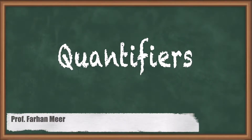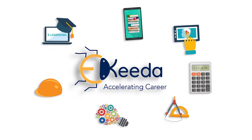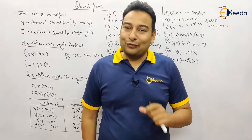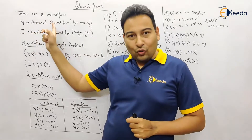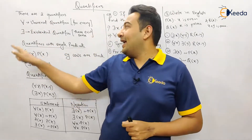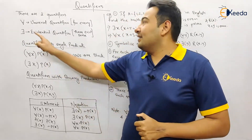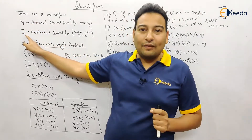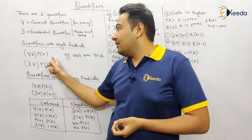Hello friends, in this video we'll talk about quantifiers with examples. There are two types of quantifiers: the universal quantifier (∀) and the existential quantifier (∃). The universal quantifier means 'for every' and the existential quantifier means 'there exists some.'